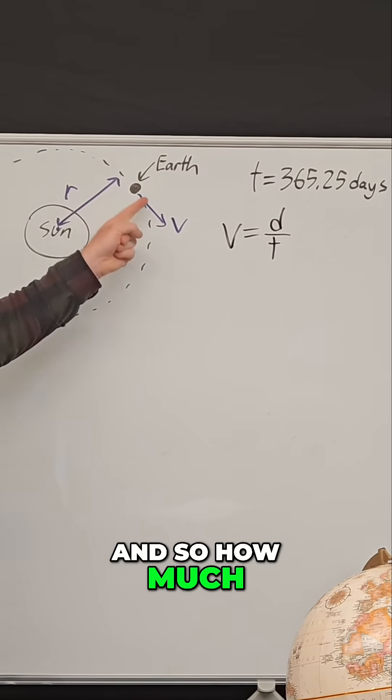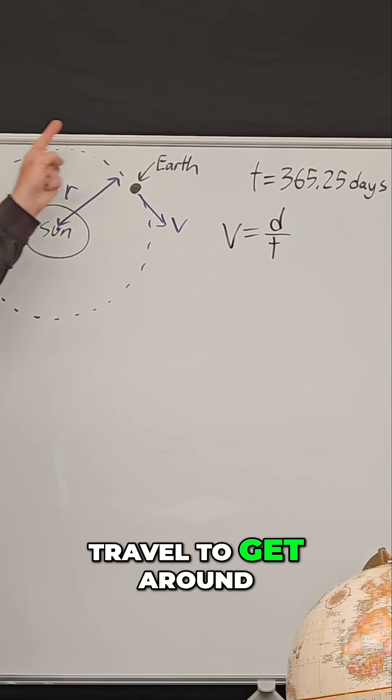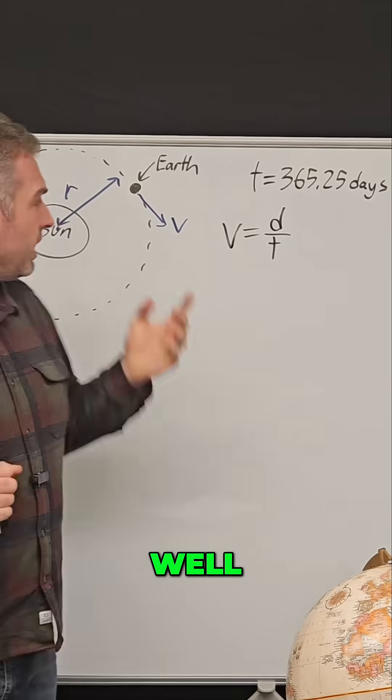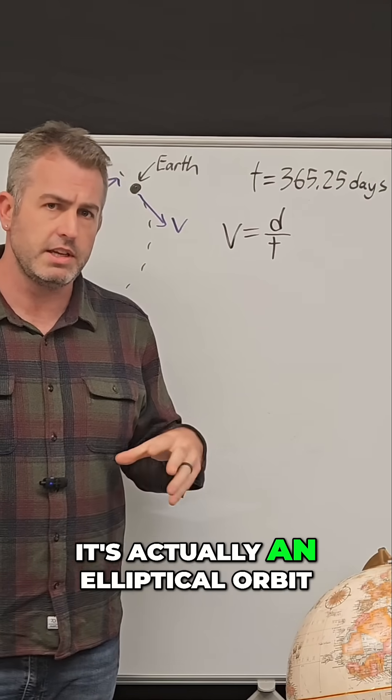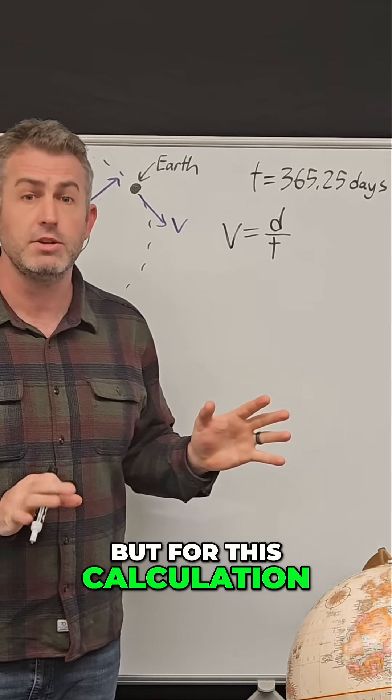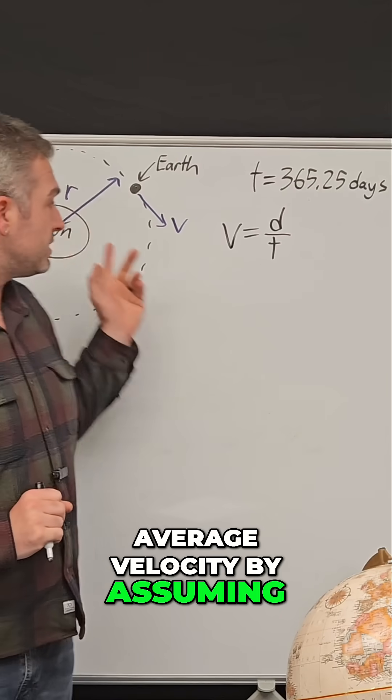And so how much distance does the Earth travel to get around the sun once? Well, if we assume that it's a relatively circular orbit, which it isn't really, it's actually an elliptical orbit, but for this calculation you can get an average velocity by assuming a circle.